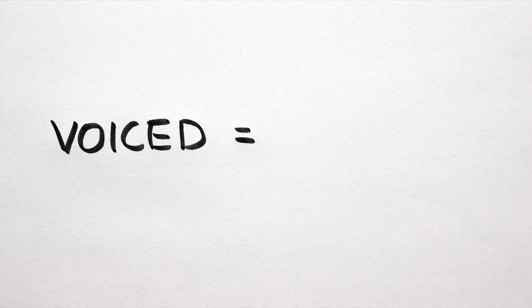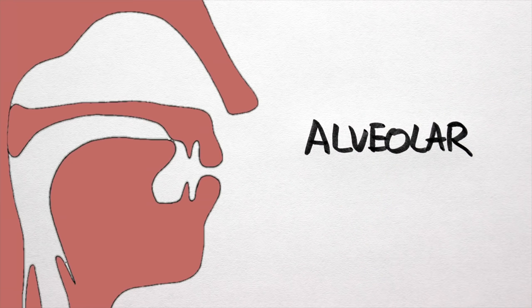Voiced means that during sound production, the vocal cords are engaged. Alveolar means that the blade of the tongue needs to obstruct the airflow at the alveolar ridge, that bony ridge just behind the upper teeth.